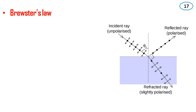Brewster's law: the unpolarized light is incident on a surface and the reflected light is polarized. When the angle of incidence equals Brewster's angle, the reflected light is completely polarized. This angle of incidence is called Brewster's angle, represented by theta b.